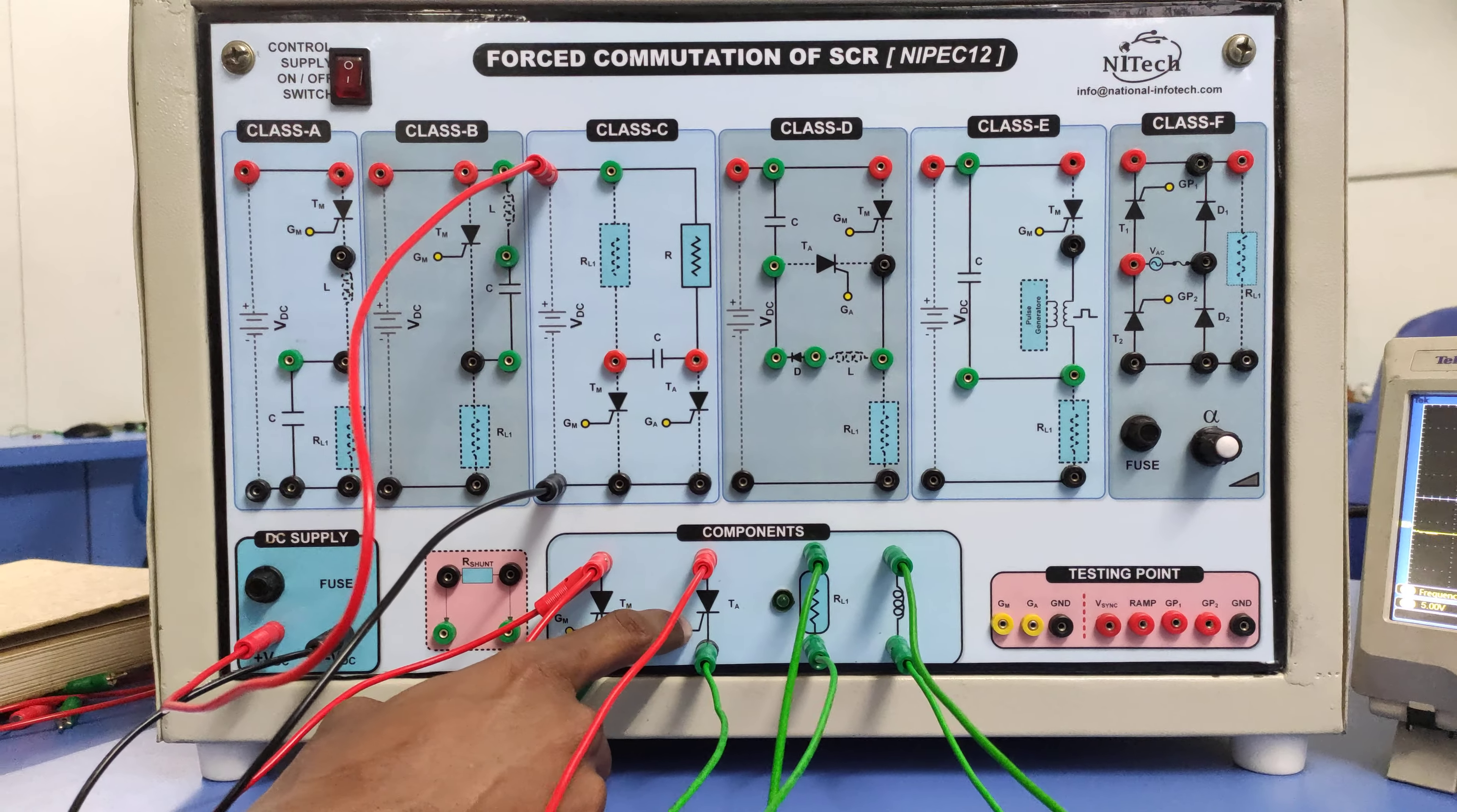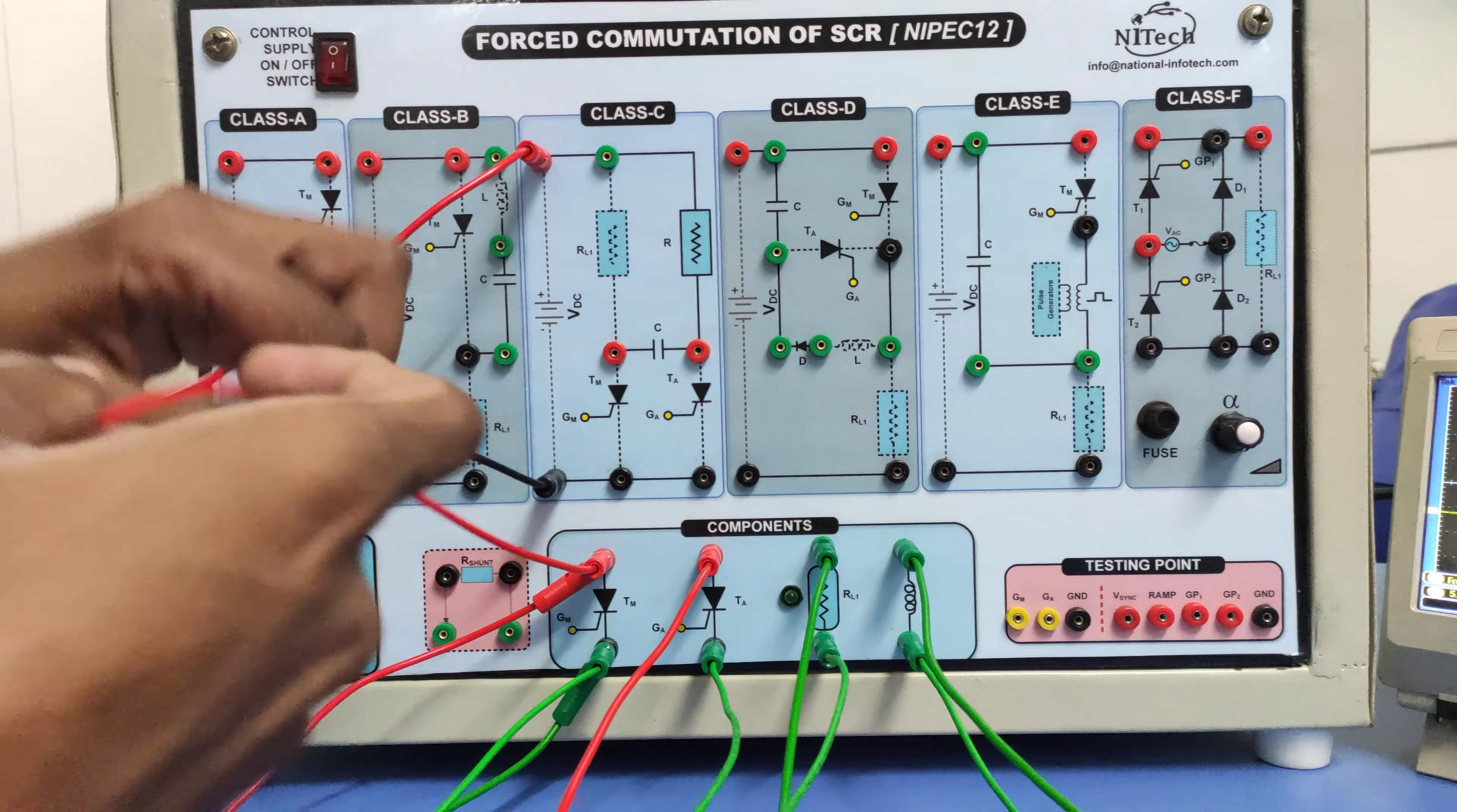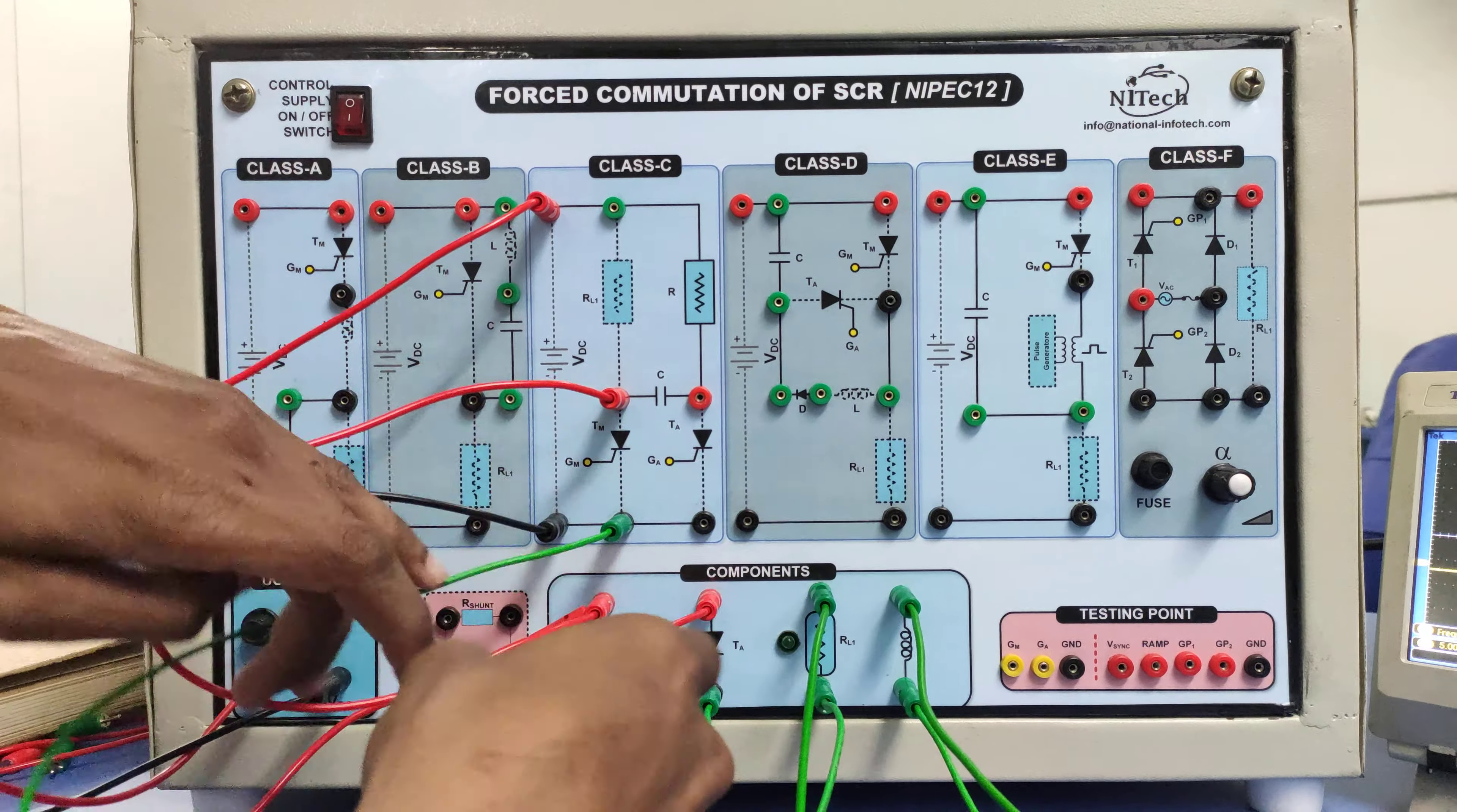Now I have connected one DC source here. Now I am connecting the main thyristor to the circuit. This is my anode of TM, this is cathode of TM.